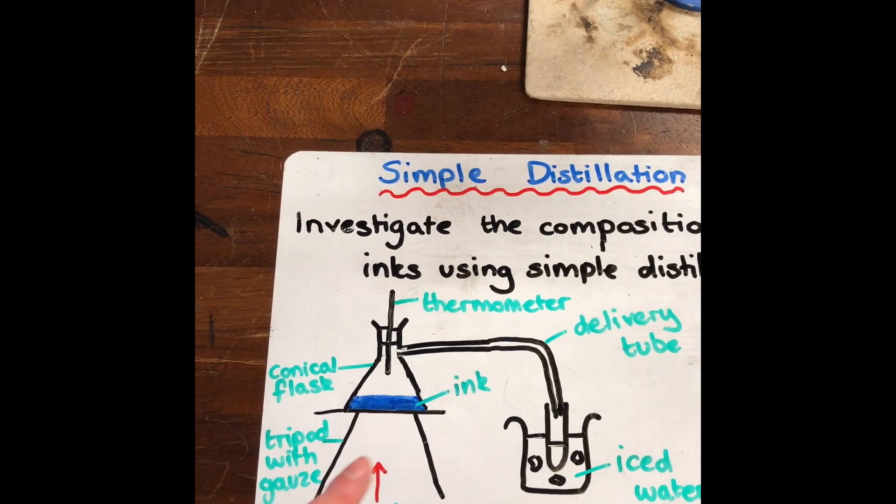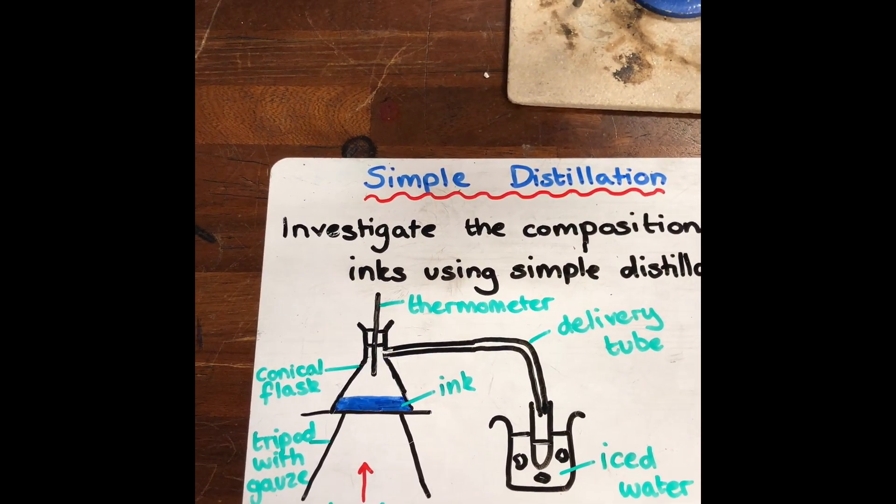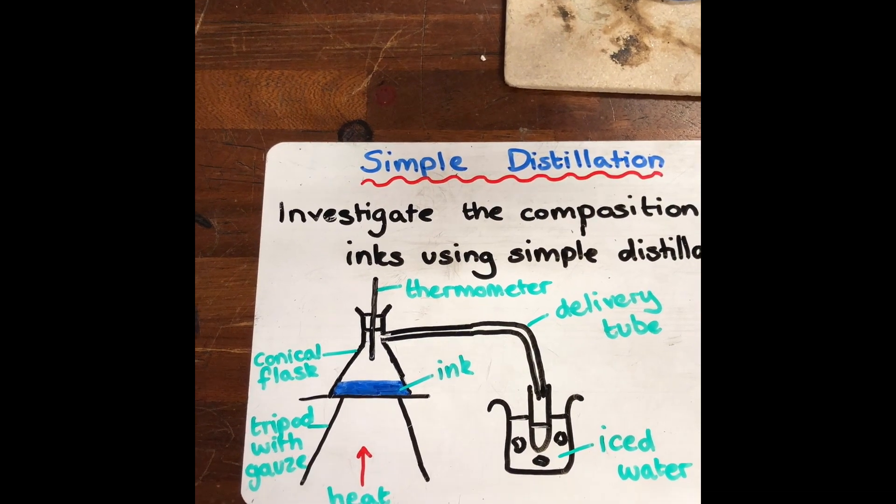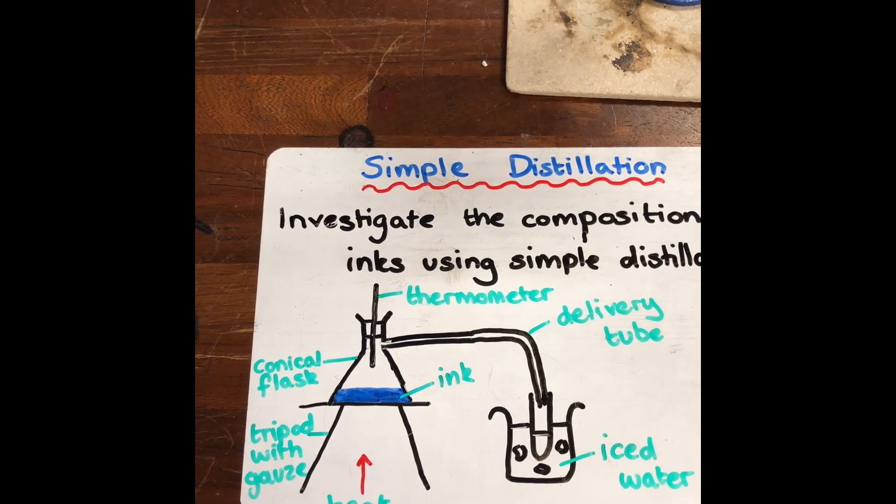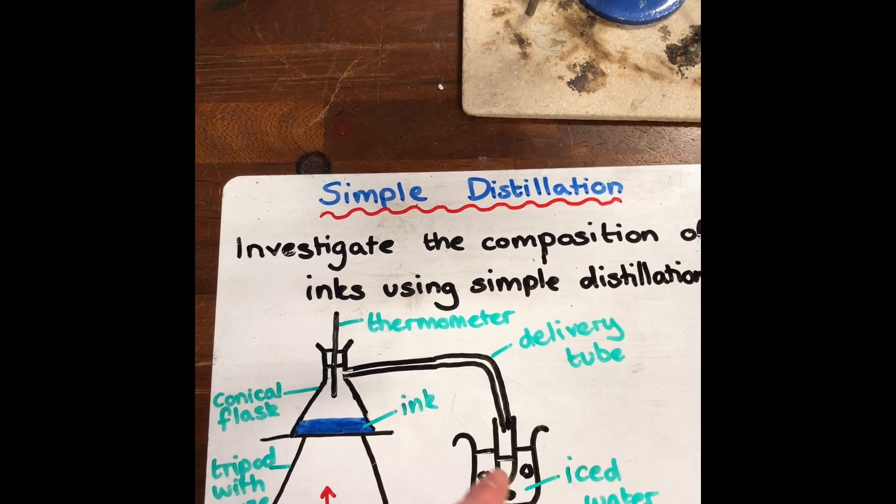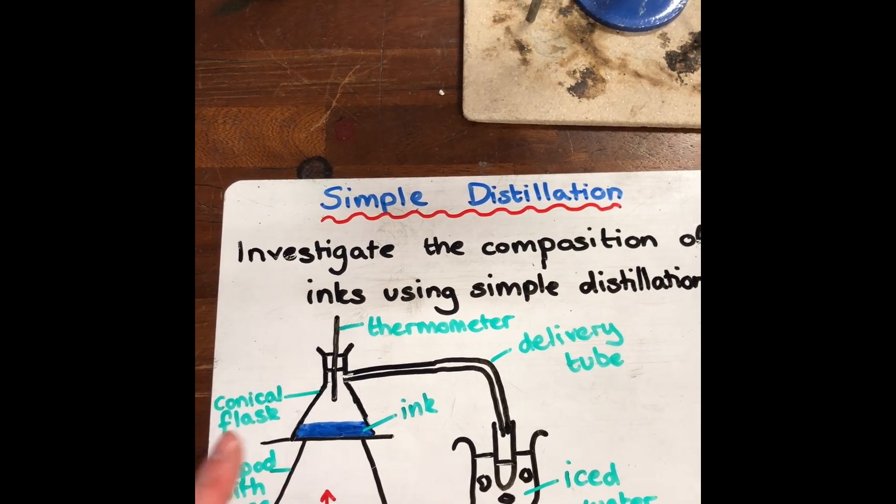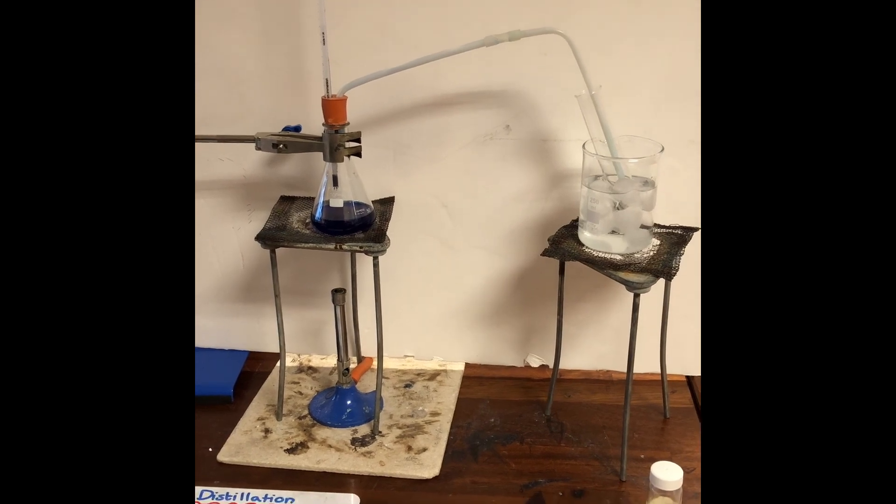What should happen, because the ink is made up of more than one substance, is that you should get the water coming off first because that's got a boiling point of 100 degrees, and then the ink staying behind because that boils at a higher temperature. So that should be all clean water and you should be left with the ink in here. That's what the equipment looks like in a science lab.